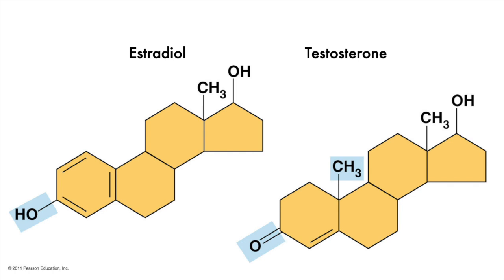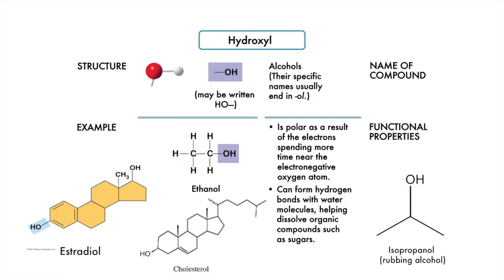The first functional group is in the lower left corner of estradiol: the hydroxyl group. The hydroxyl group OH looks very much like the hydroxide ion that we saw when water dissociates. It's not the same thing though, because once this OH group covalently bonds to carbon, it doesn't behave in the same way. Organic molecules with hydroxyl groups are called alcohols and include the highly regulated consumable ethyl alcohol, or ethanol, that is found in beer, wine, white claws, and distilled liquors like whiskey, vodka, gin, etc.